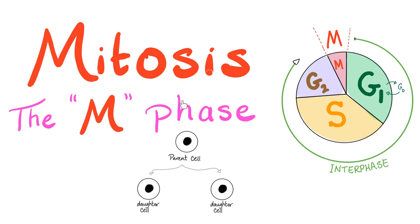Hey guys, it's Medicosis Perfectionatus, where medicine makes perfect sense. Let's continue our biology MCAT playlist. In previous videos, we have talked about the cell cycle. Today, we'll talk about the M phase, aka mitosis, where one parent cell will give you two identical daughter cells. So let's get started.